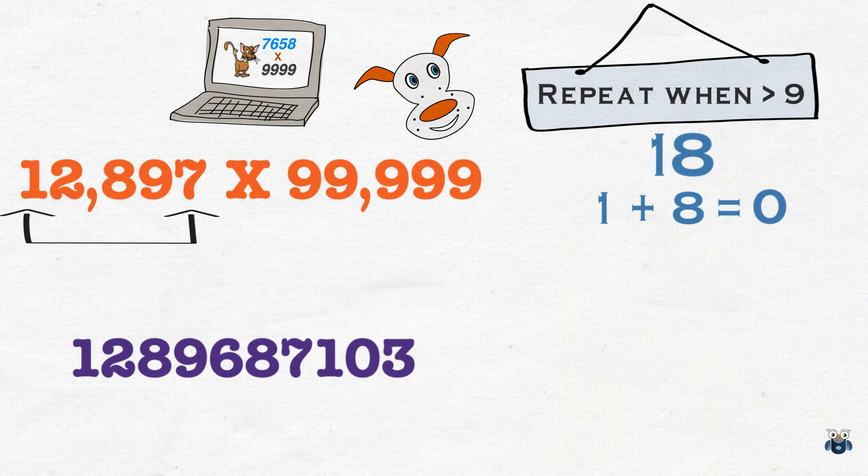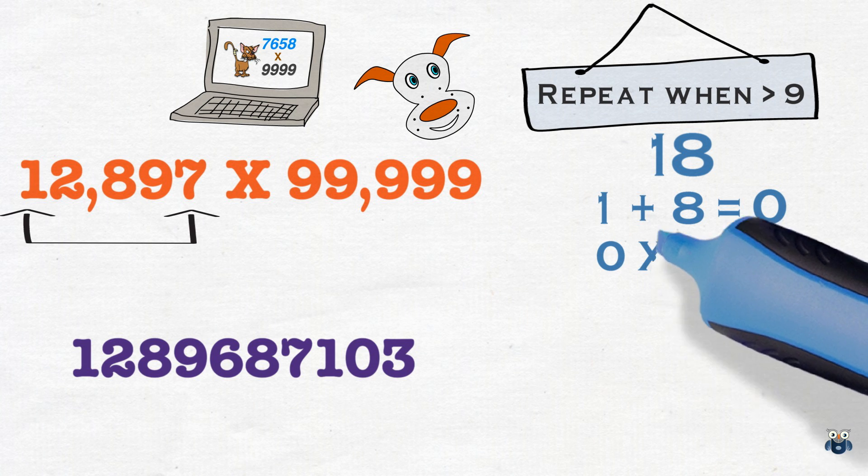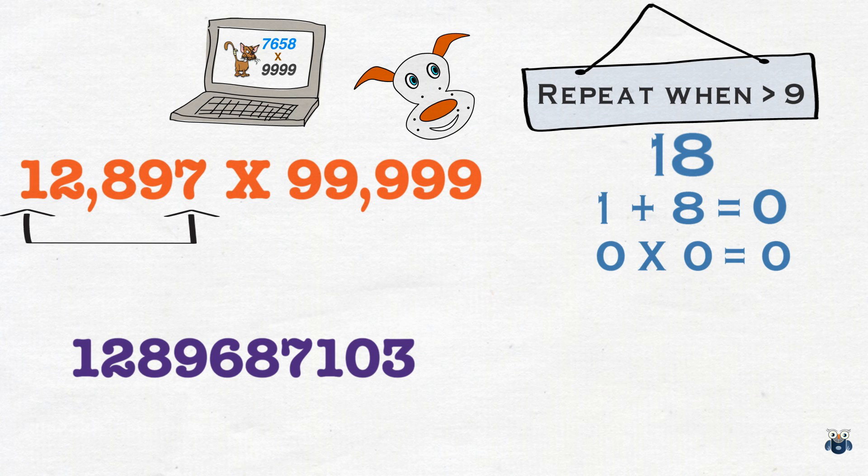Now, let's look at 99,999. This is easy. These are all 9s. So, our answer is 0. Now, 0 times 0 is 0. This is the first check result.